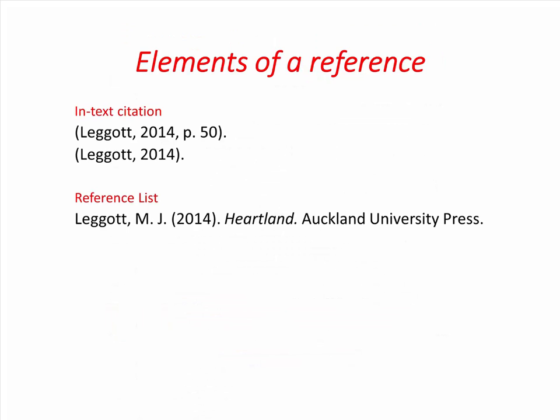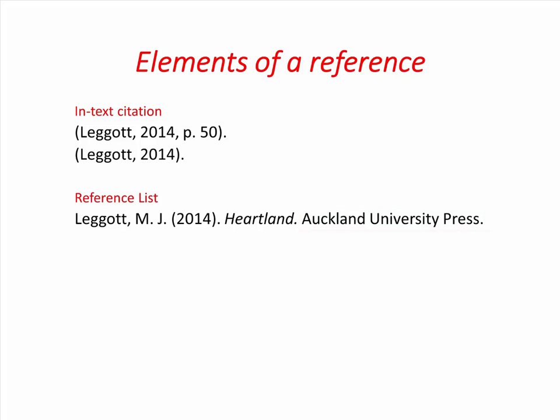There are four main elements to a reference: author, date, title, and source details. Each element is separated by a full stop. This is a reference for a book. The format will be different for other types of sources, so check out the other APA referencing videos for help.